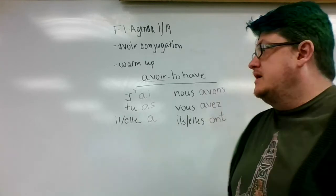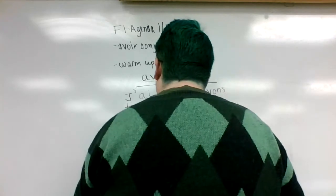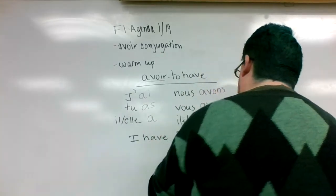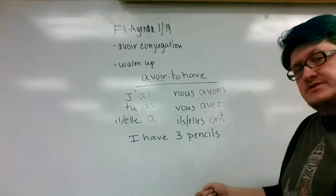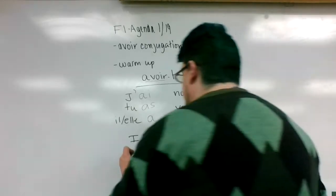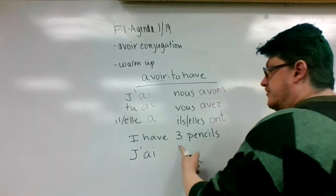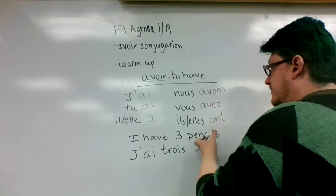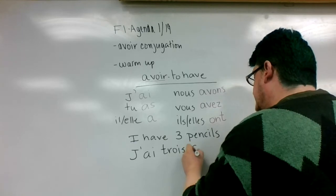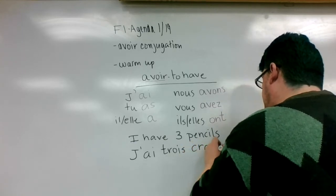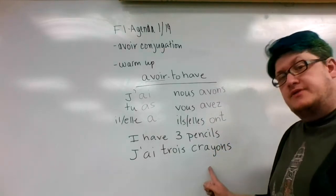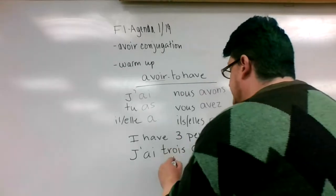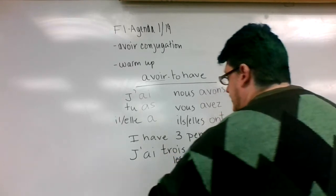So in your warm-up, if you see something like 'I have three pencils' and you want to translate it into French, your 'I have' would be j'ai. Then the word for three in French is trois, and since we learned plurals, I have to make it plural. The word for pencil is crayon, and it's plural so I add S. You'll notice I do not have a definite article in front because I have the number three. If there's a number, you don't use LES or DES.